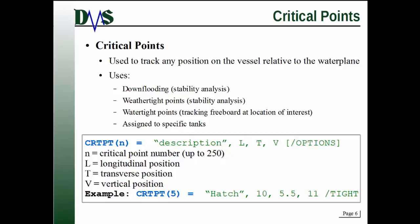And that's the key part. If you're concerned about where this is relative to the water plane, useful thing. The way they get used, for example, is you're checking for down flooding, you're checking for weather type points, you're checking for water type points, or you can even assign them to specific tanks. So for example, down flooding, we want to know if a certain critical point falls below the water plane. For example, this might be the vent on a tank. You know that once that vent falls below the water plane, that means it's underwater, and water is actually flowing into your ship at that point. That's the kind of thing that critical points will be used to track.